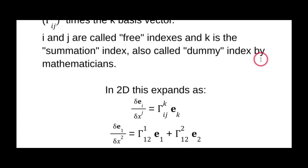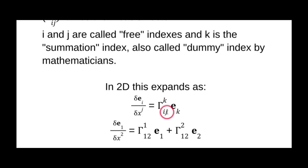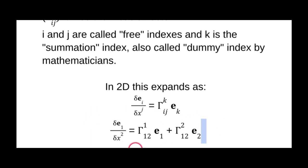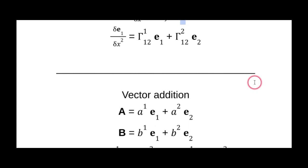In two dimensions, let's expand this to what it actually looks like. If I take the partial derivative of the e₁ basis vector with respect to the x² coordinate, then 1 and 2 are the free indexes — I can't change them. The Christoffel symbol Γᵢⱼᵏ has i=1, j=2 as free indexes, and k is the summation index that runs over 1 and 2. This is a real equation you would see in general relativity.